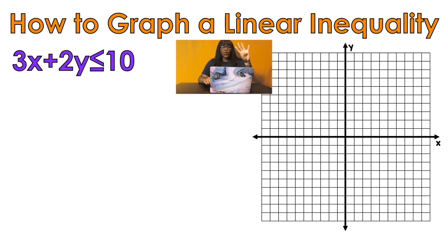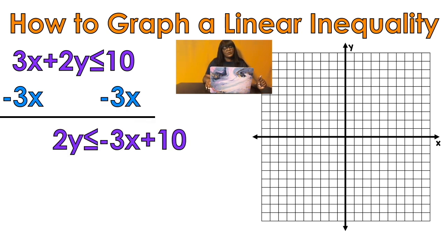Example numero cuatro. I need to isolate y. This problem isn't so easy this time because I have stuff that I need to get rid of. So minus three x minus three x. Two y is less than or equal to negative three x plus 10. Don't combine the three x and the 10. They're not like terms. Can't combine them. So I'm going to divide by two because I need to get y by itself.